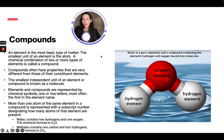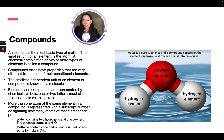An element is the most basic type of matter, and the smallest unit of an element is an atom. A chemical combination of two or more types of elements is called a compound, and compounds often have properties very different from those of their constituent elements. The smallest independent unit of an element or compound is known as a molecule. Elements and compounds are represented by chemical symbols of one or two letters. More than one atom of the same element in a compound is shown with a subscript number. Water is H₂O — two hydrogens and one oxygen — and methane is CH₄, one carbon and four hydrogens.